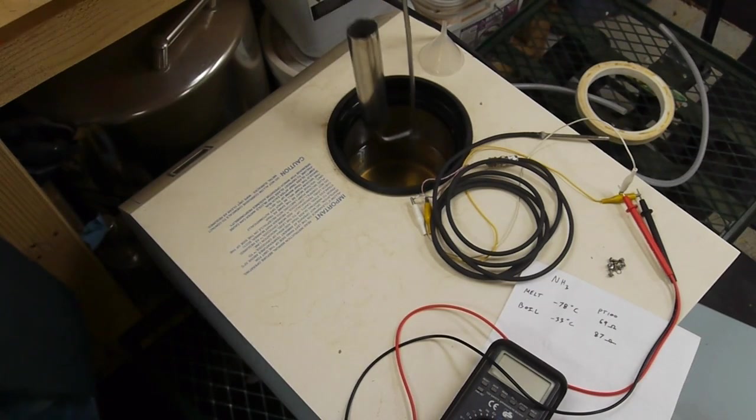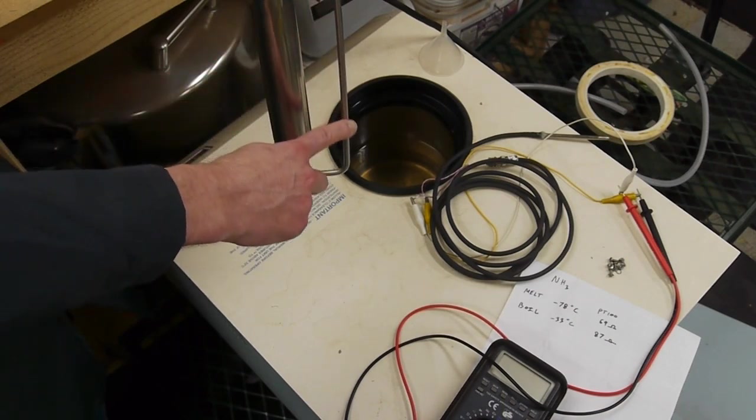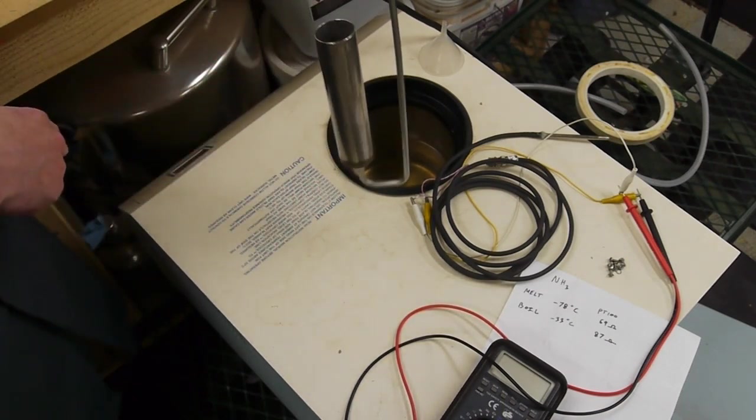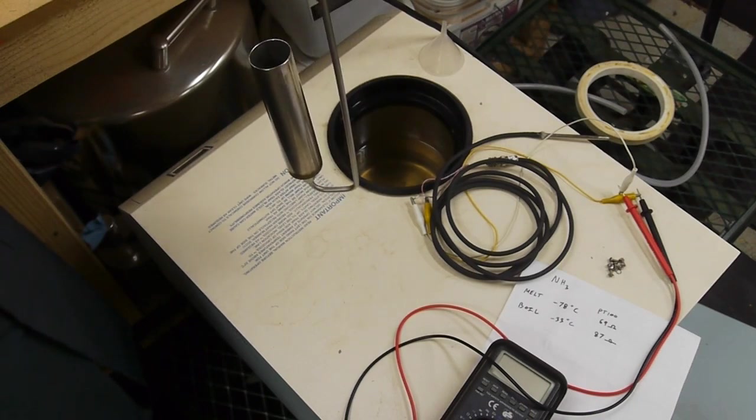So when this thing sits down into the cold alcohol in there, the ammonia will have more than enough chance to condense and it will flow up in here as a liquid. And then this thing will hold all the liquid until I'm ready to put it in the storage container. And this ended up working quite well.